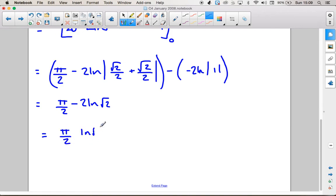that's going to be ln of root 2 squared which is obviously just 2. So it's pi over 2 minus ln 2. Good luck!